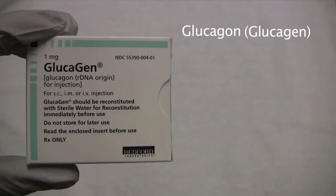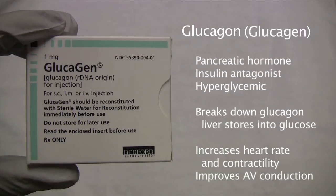Glucagon, or glucagen, is a pancreatic hormone, insulin antagonist, and hyperglycemic.